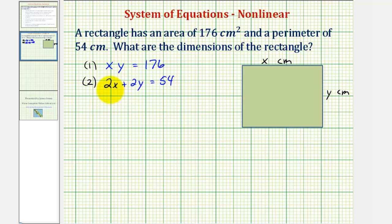To do this, subtract 2x from both sides, giving us 2y equals 54 minus 2x. Now divide both sides by 2, so y equals 27 minus x.